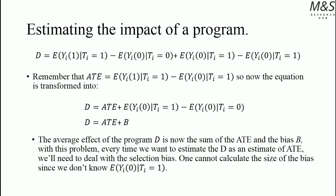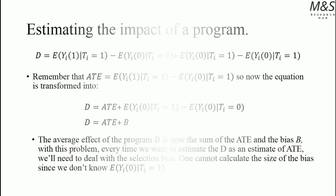With this problem, every time we want to estimate D as an estimate of the ATE, we need to deal with the selection bias problem. One cannot calculate the size of the bias, since we don't know the expression of the proper counterfactual. So we need to make assumptions in order to estimate the impact of a program.